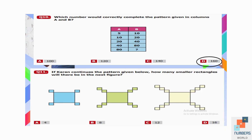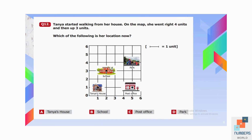Question number eleven: If the pattern continues, how many smaller rectangles will there be in the next figure? There are 4 smaller rectangles in the first figure, 8 in the next, 12 in the next — it is a table of four. The next number will be 16. D is our answer.